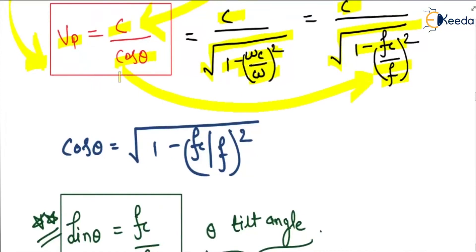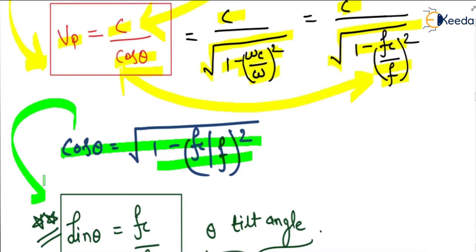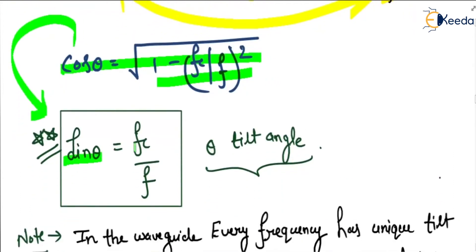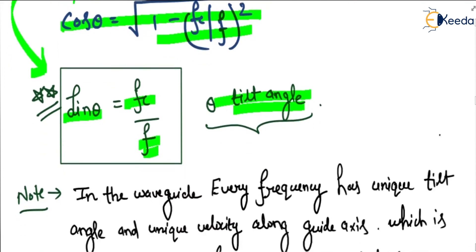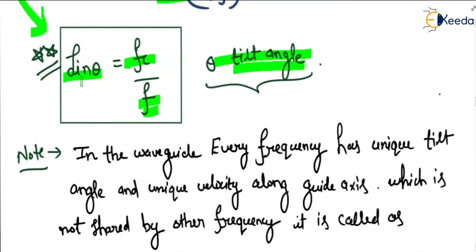Comparing these expressions, cos θ equals the square root of 1 minus (fc/f)². We can also calculate sin θ: sin θ equals fc/f, where θ is called as tilt angle. So the formula of tilt angle or wave angle is sin θ equals fc/f, and θ equals sin⁻¹(fc/f).